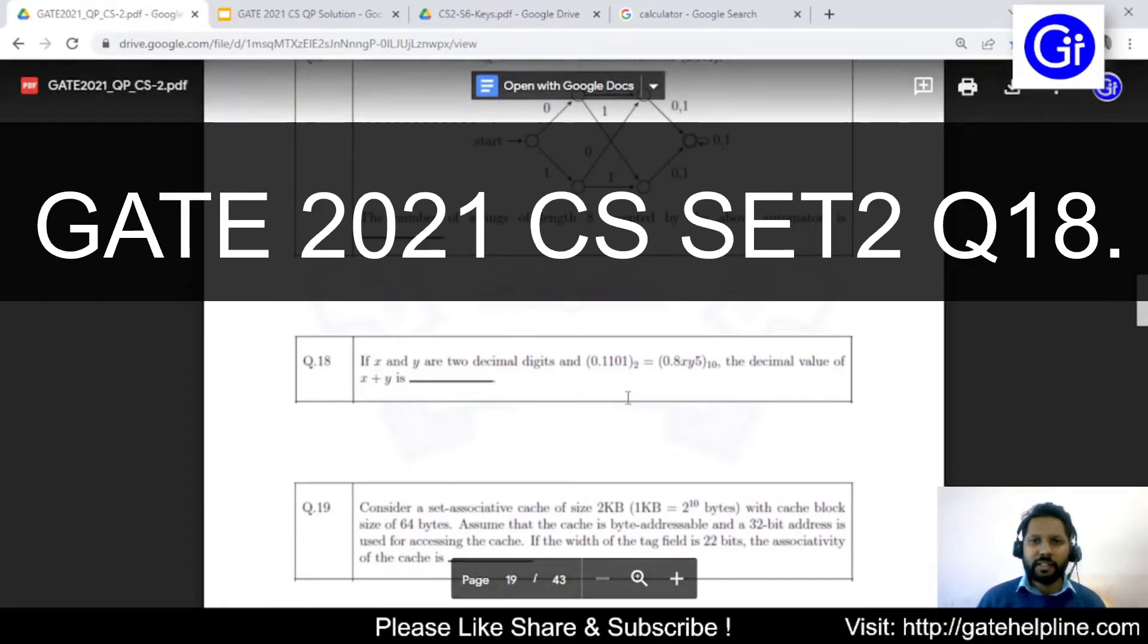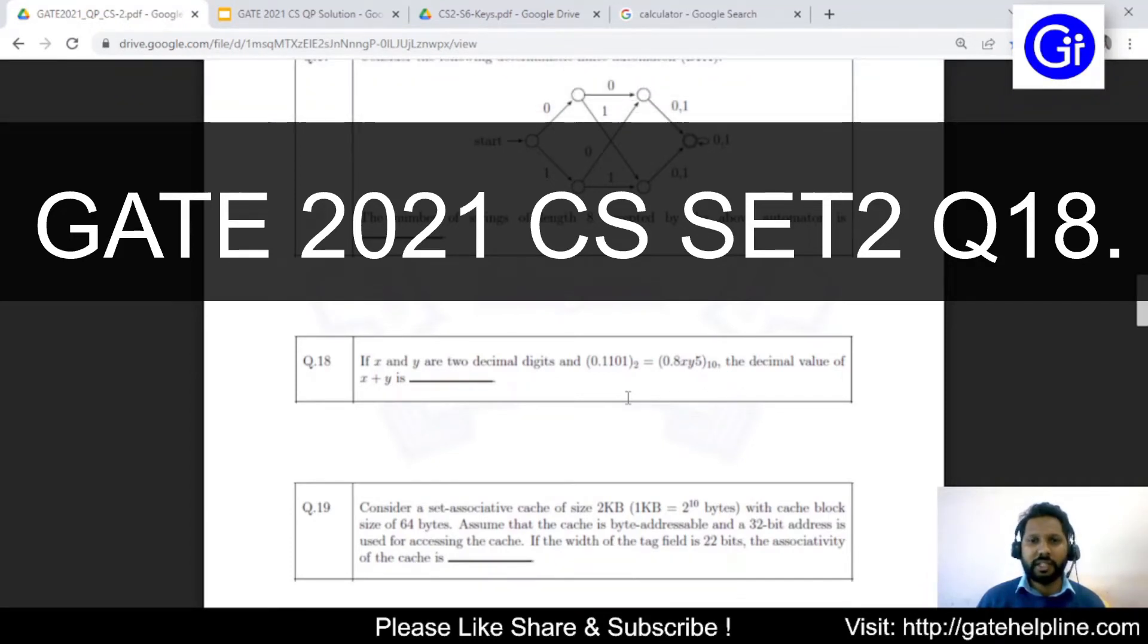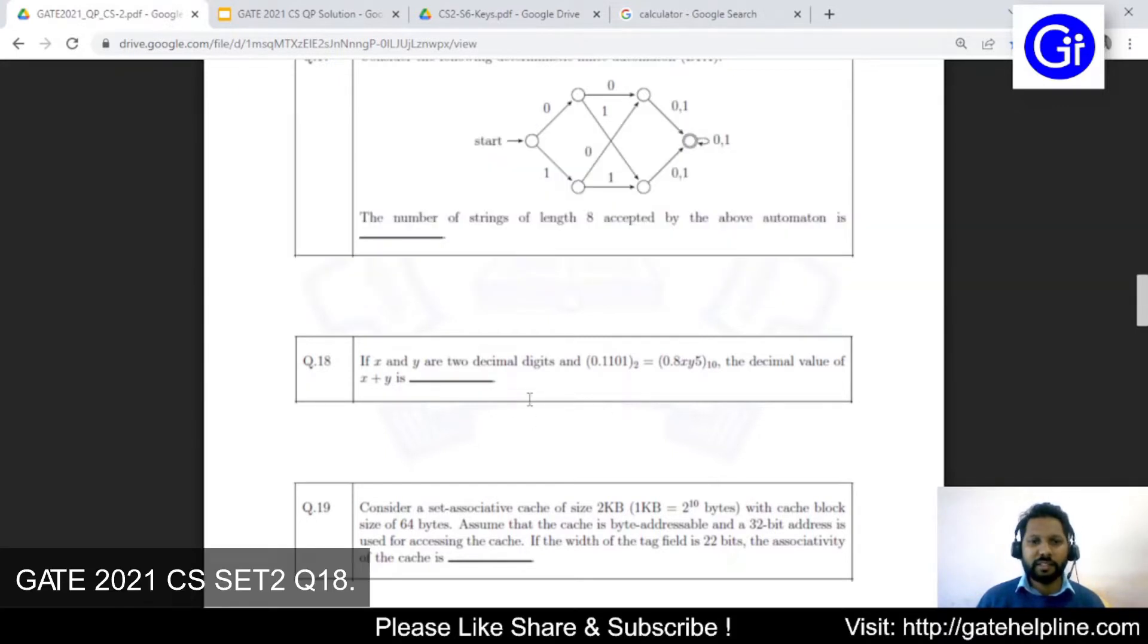Hello friends, you are watching Gate Helpline. In this video we will see Gate 2021 CS SET 2 question number 18. The question is: if x and y are two decimal digits and 0.1101 base 2 equals to